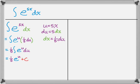And then the original function was in terms of x, so let's go back to x. So 1 fifth e to the 5x plus c. Okay, so that's one way of doing it. Put a box around that.